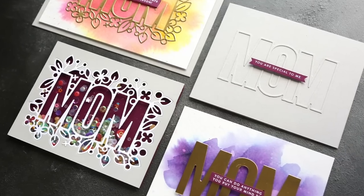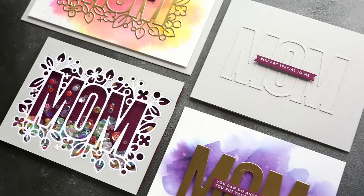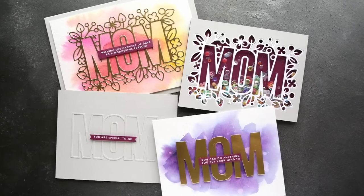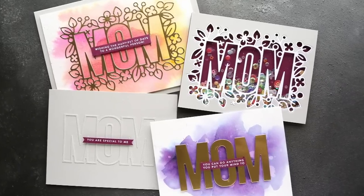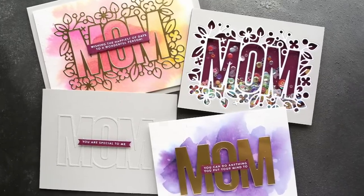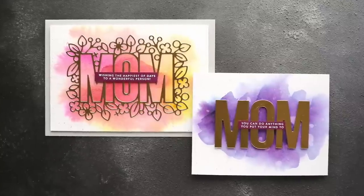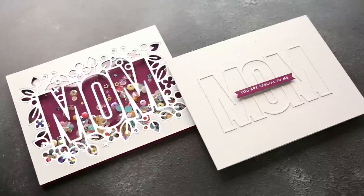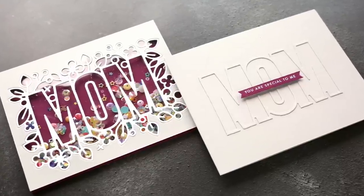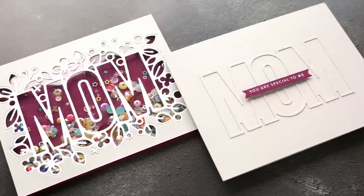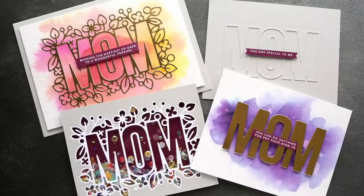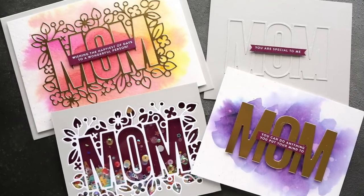Hi everyone, Kristina Werner here. Welcome to another video for SimonSaysStamp.com. Today I'm going to be showing you four different ways to use the Outline Floral Mom craft die that was just released a few weeks ago. For two of the cards, I'll be creating very easy watercolor backgrounds using Nouveau shimmer powders. And then for the other two, I'm first going to create a simple shaker card, and then I'm going to modify the die and create a really clean and simple card design.